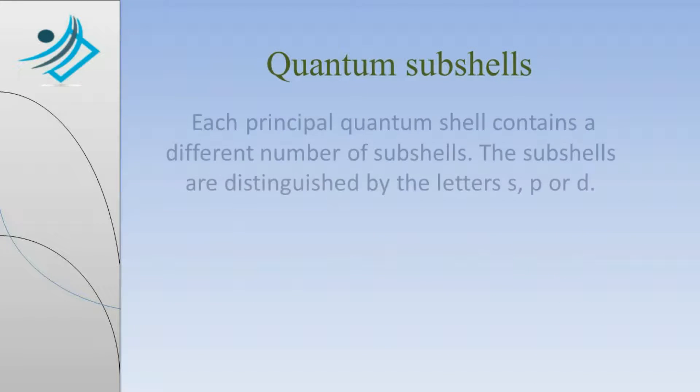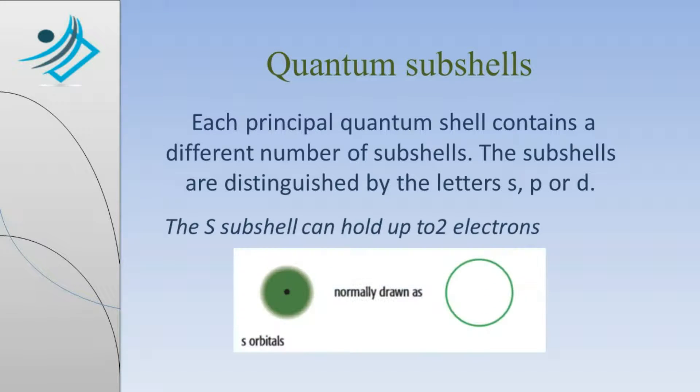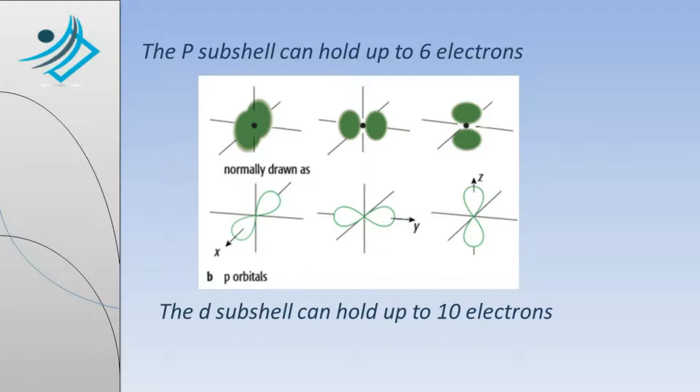Quantum Subshells. Each principal quantum shell contains a different number of subshells. The subshells are distinguished by the letters S, P, or D. The S subshell can hold up to 2 electrons, the P subshell can hold up to 6 electrons, and the D subshell can hold up to 10 electrons.